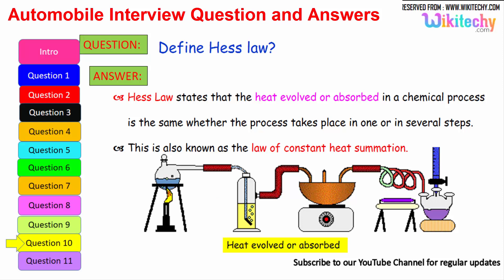This is one of the very important questions. In case of generating heat between an object in emissions, Hess's law states that the heat evolved or absorbed in a chemical process is the same whether the process takes place in one or in several steps. This is also known as the law of constant heat summation.